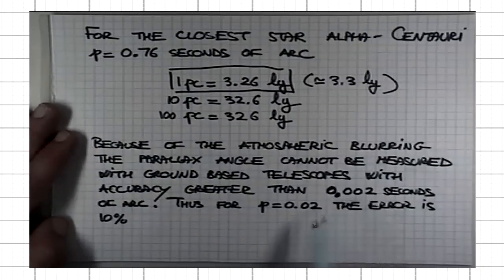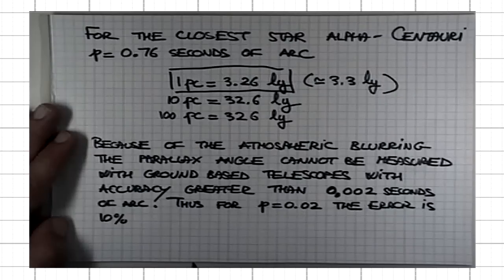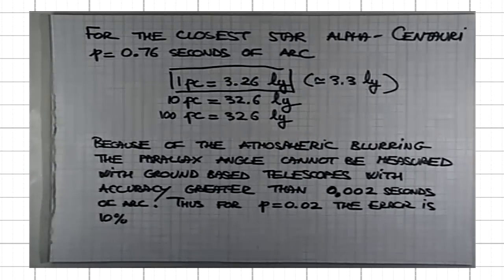Because this margin of error is one-tenth of the parallax angle, 10%. That is the maximum that can be tolerated.